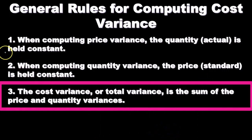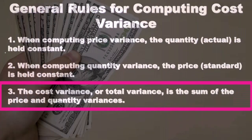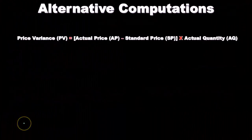Rule three: the cost variance, or total variance, is the sum of the price variance and quantity variance. This represents the total difference between the actual and budgeted financials — for example, on direct material and direct labor. That total variance can then be broken down into its component parts, which add together to arrive at the total variance.